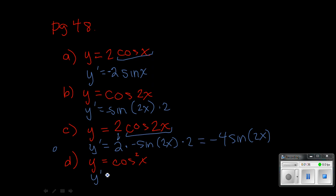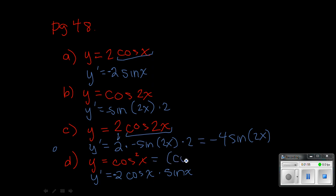The last one on this section is again the chain rule. So this square would be the first thing that we take care of. So it'd be 2 cosine x to the 1 power, and then I multiply by the derivative of the inside, which is negative sine x, and I'm going to put the negative out front. So cosine x squared — the 2 comes out front, cosine x stays the same now to the 1 power, and then you multiply by the derivative of the inside, which is negative sine x.